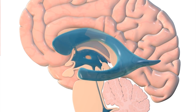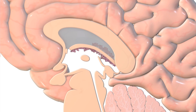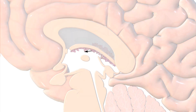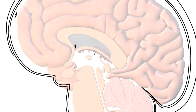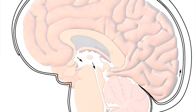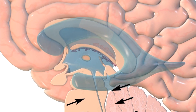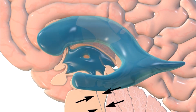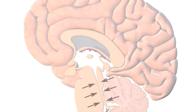An endoscopic third ventriculostomy has a goal of creating a new outflow tract for cerebrospinal fluid. As you can see in this pictorial representation, a frond of tissue known as the choroid plexus, which exists within the ventricles, normally creates cerebrospinal fluid. This circulates throughout the ventricular system, normally exiting from the third to the fourth ventricle through the aqueduct of Sylvius. Blockade of the aqueduct of Sylvius, in this case from a tumor, results in cerebrospinal fluid being unable to exit the ventricular system.